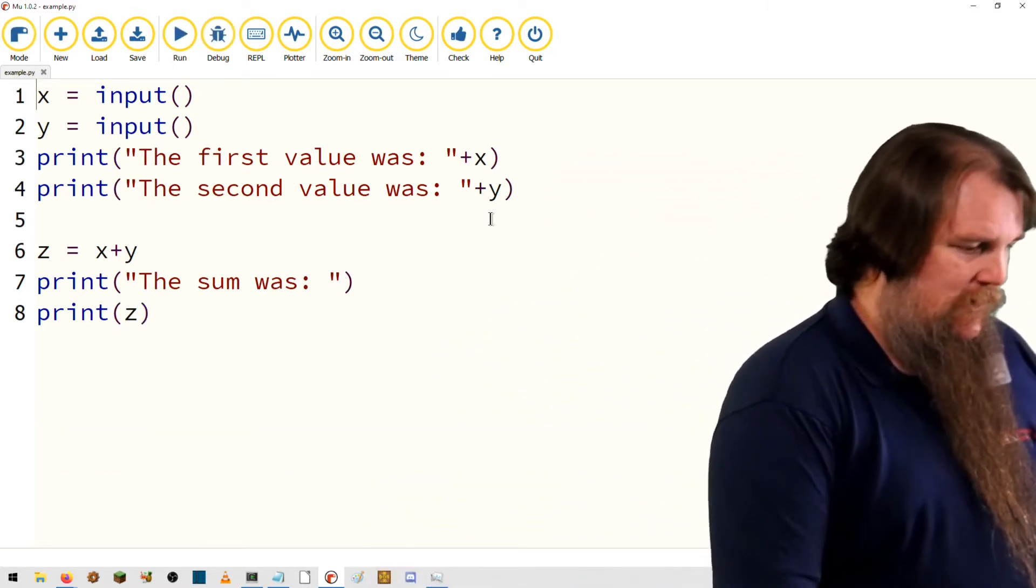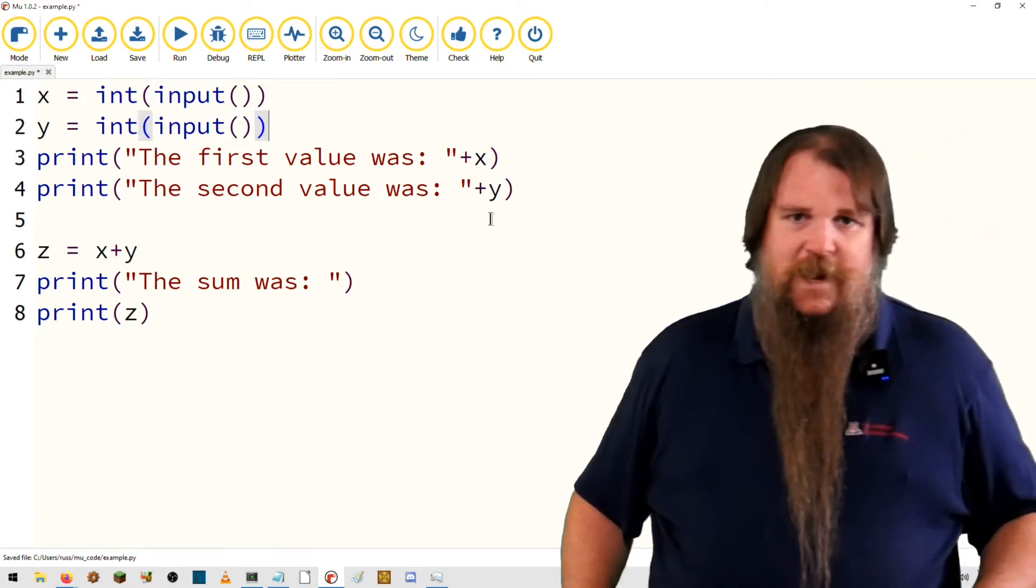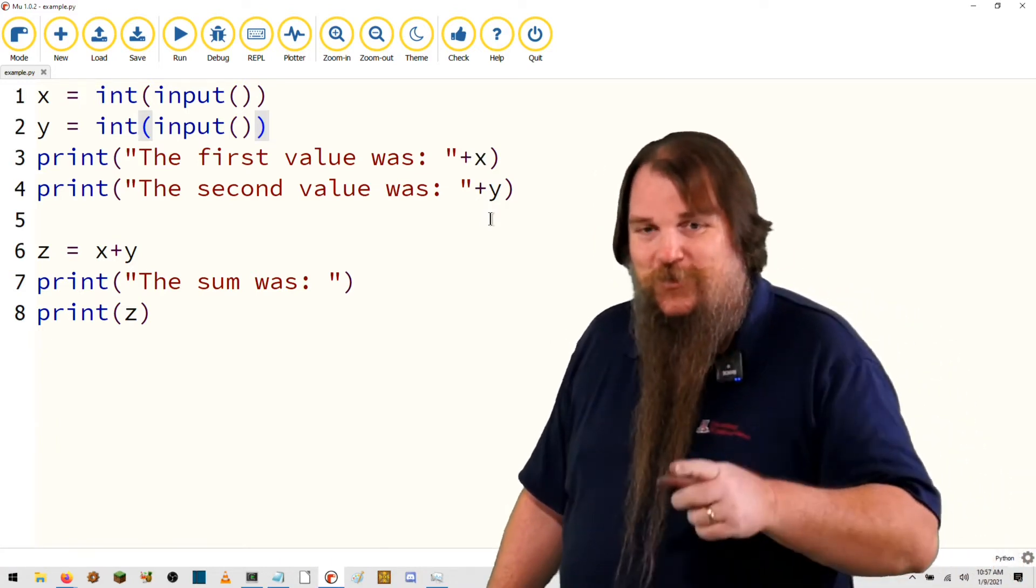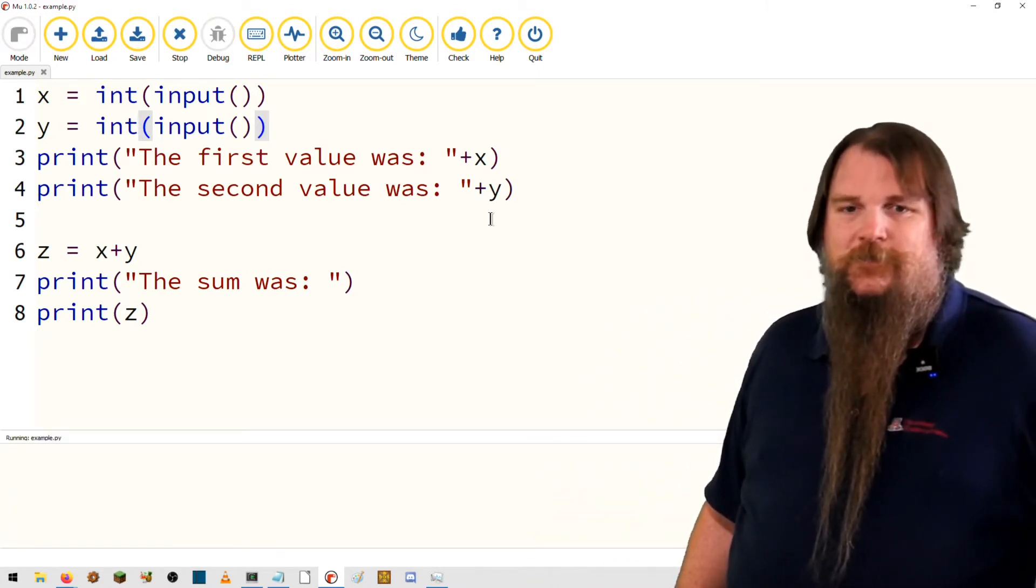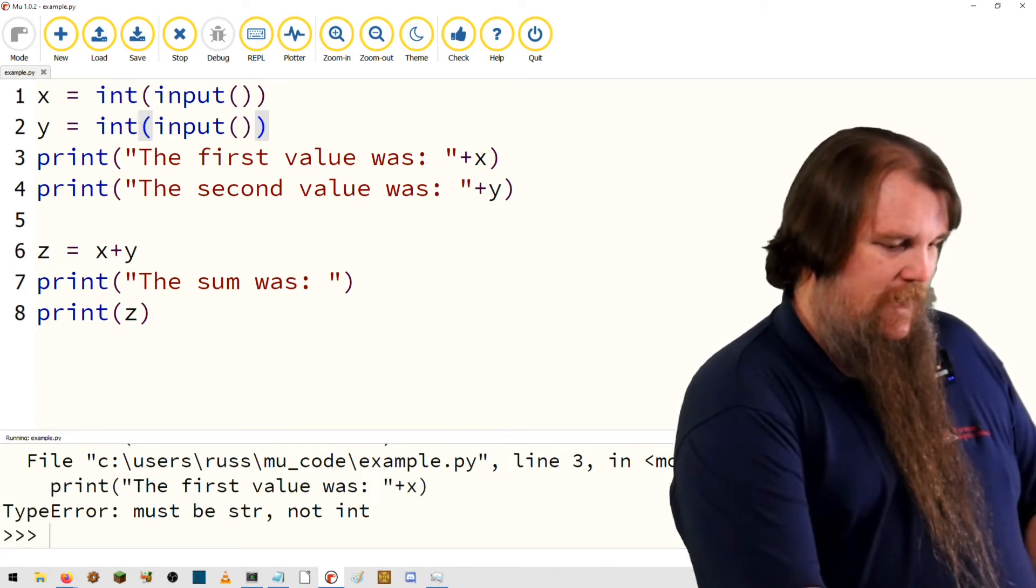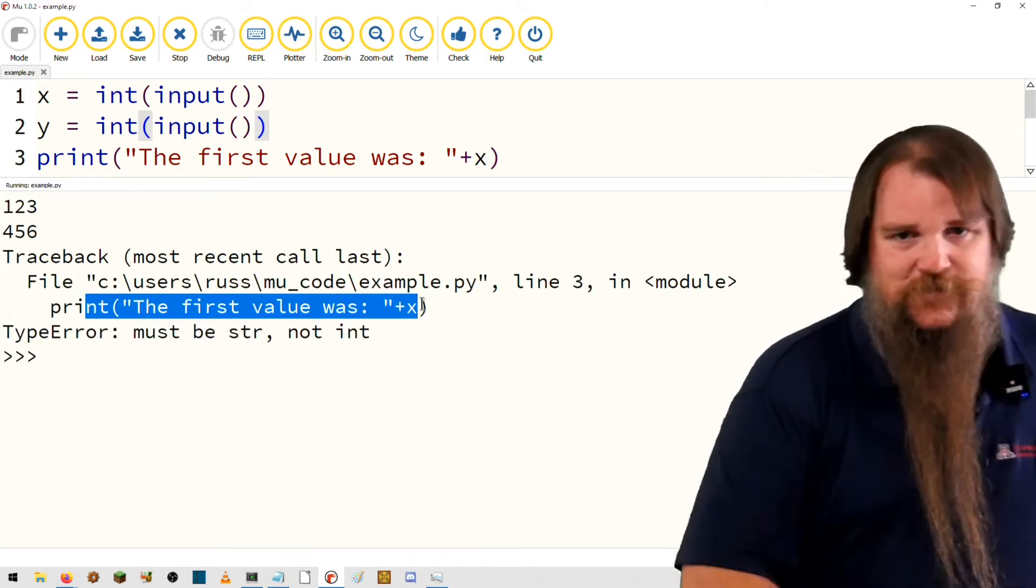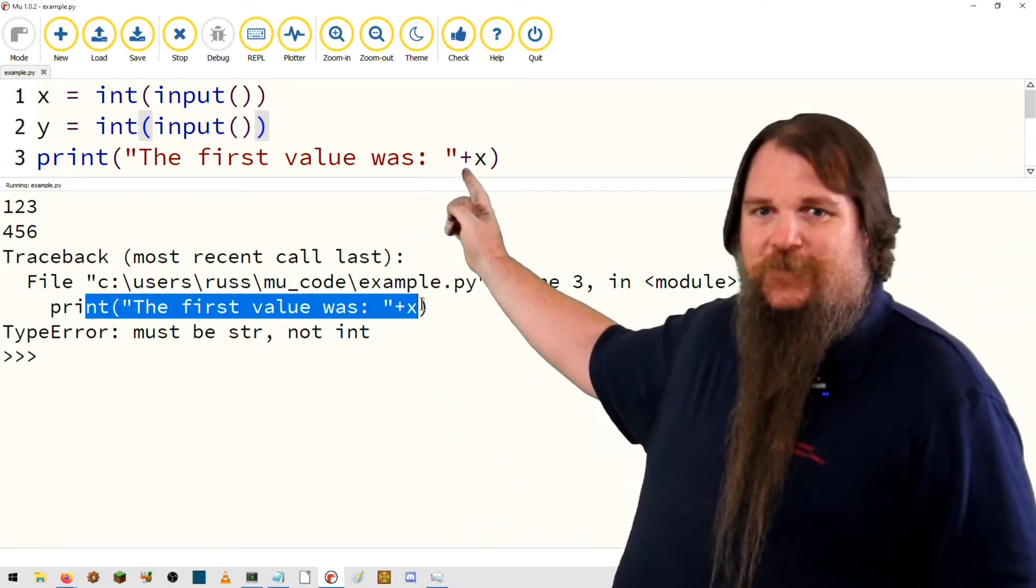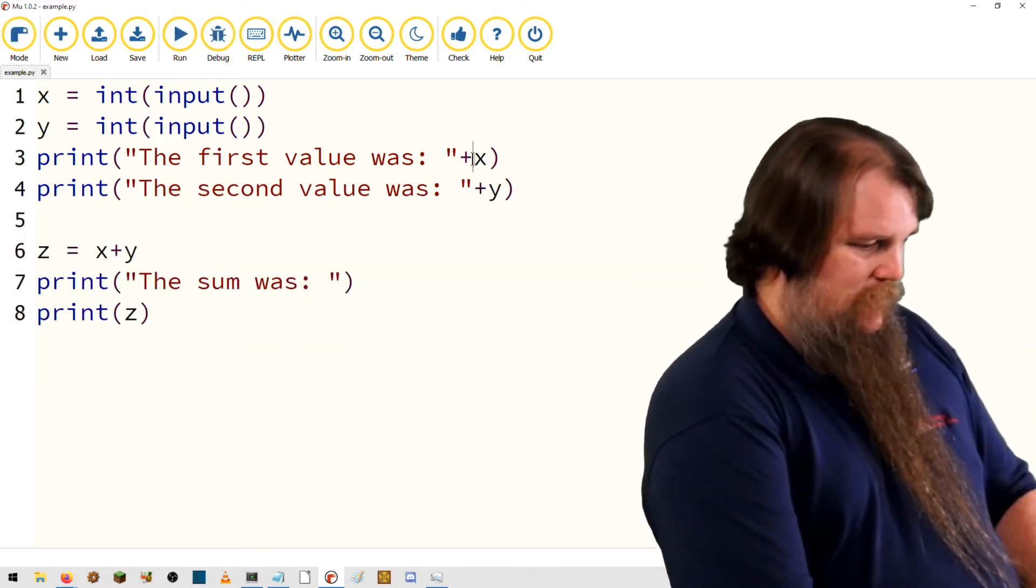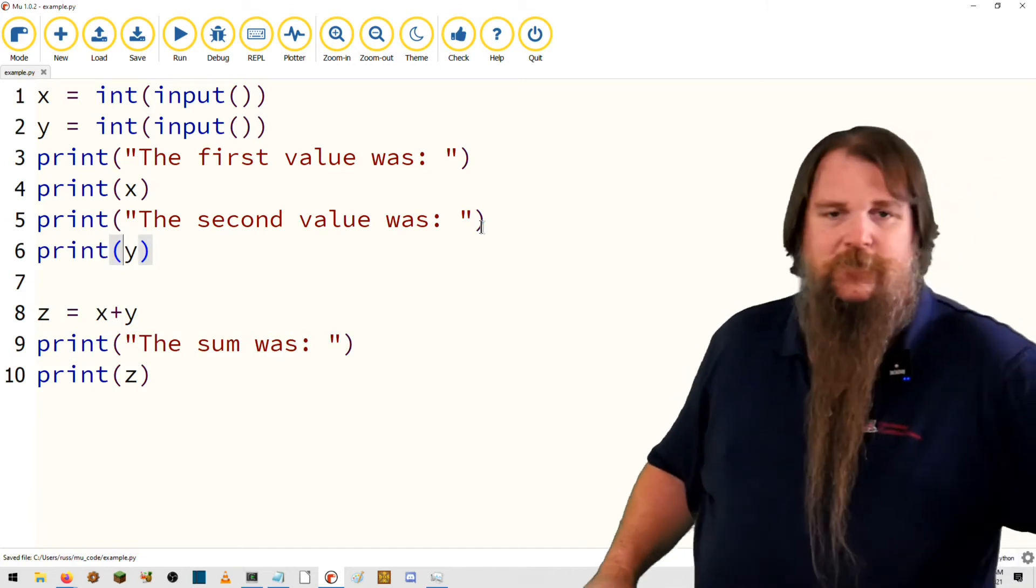How do we do conversions? To turn something into an integer, we call the int function. Now, I want you to do a little prediction here. What's going to go wrong? Something's going to crash. Can you see where it is? Oh, I have to type things: one, two, three, four, five, six. Ah. Type error must be string, not integer. The first value was. What happened here? We're doing that plus between a string and something that's now an integer. Whoops. That wasn't what we meant to do. I'll show you formatted strings soon enough, but we'll do this as a quick temporary thing so we don't add too many things all at once.